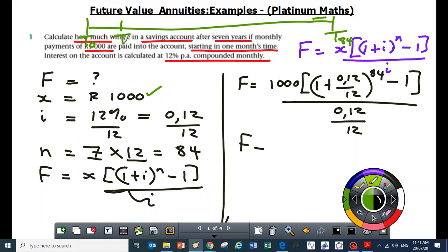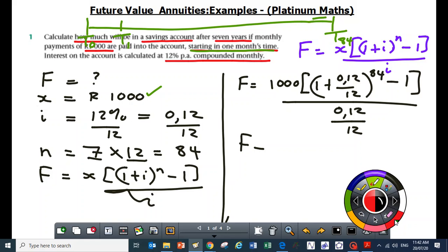The first payment is made at T1 deposit, because the question says the first deposit is made starting in one month's time. When dealing with investments, in most cases you don't start making a deposit on the day that you open that specific savings account. You will negotiate to start making the first payment after a month.